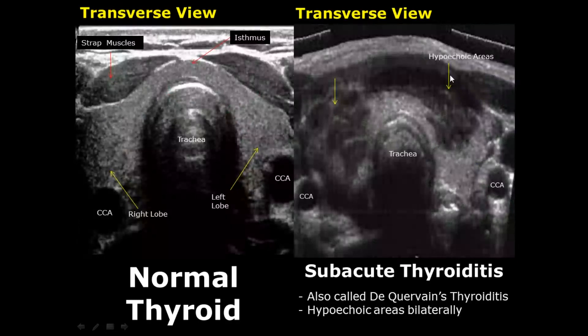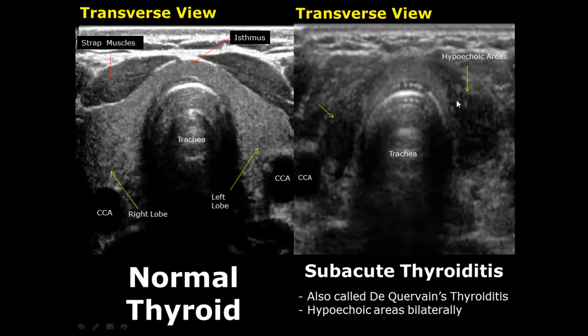Subacute thyroiditis, also known as de Quervain's thyroiditis, involves both lobes of the thyroid bilaterally. We will see hypoechoic regions in both thyroid lobes. Here is another case of subacute thyroiditis showing hypoechoic areas bilaterally in the right and left lobes. Thank you so much for watching — please subscribe and stay tuned for more imaging videos.